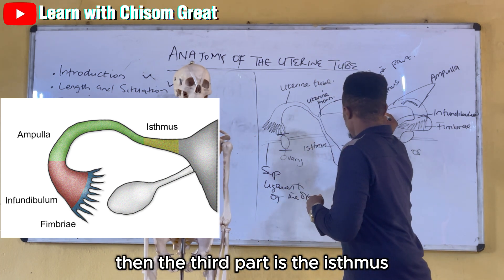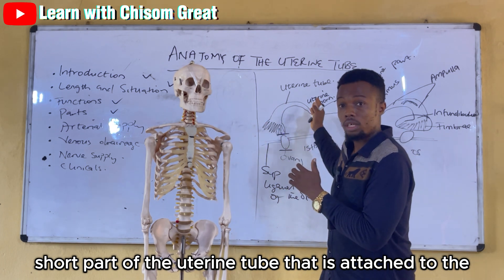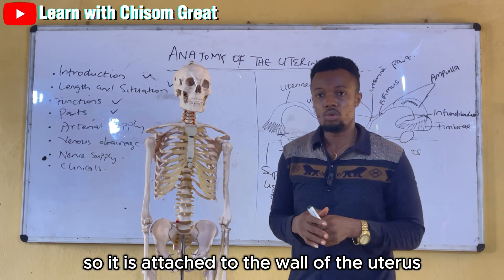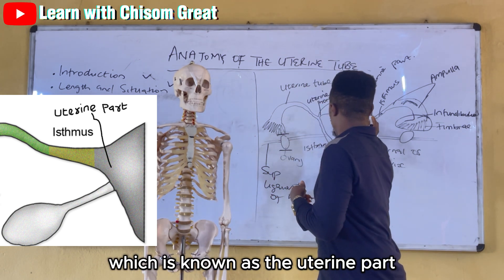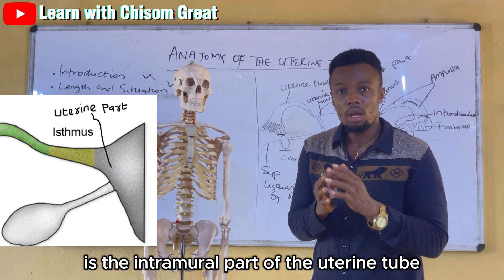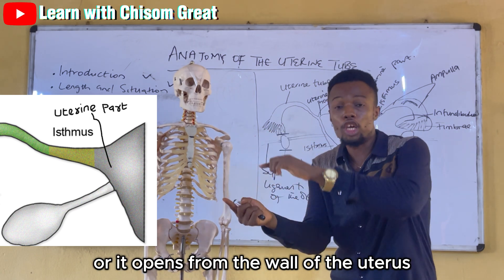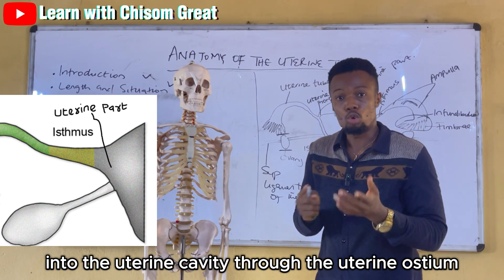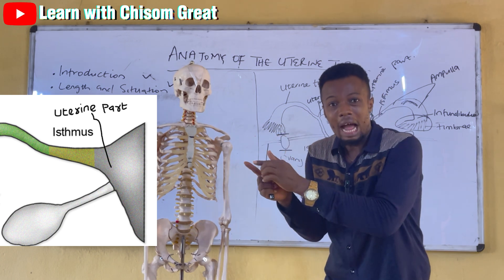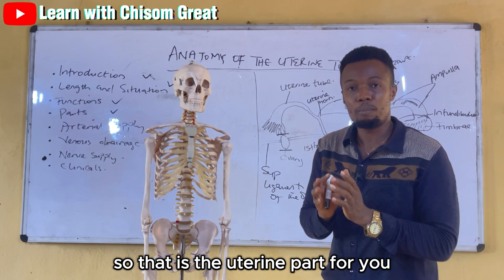The third part is the isthmus — a thick-walled, short part of the uterine tube that is attached to the wall of the uterus. The fourth part is the uterine part, which is the intramural part of the uterine tube. It opens from the wall of the uterus into the uterine cavity through the uterine ostia, meaning it is located within the wall of the uterus.